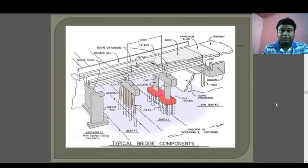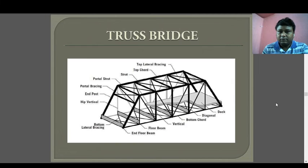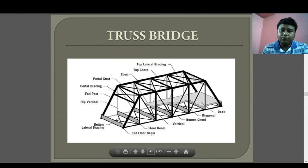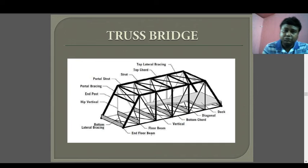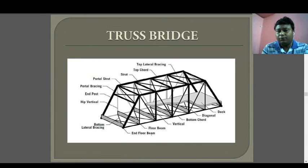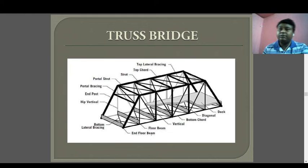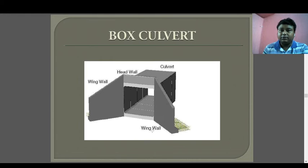These are typical bridge components. For truss bridges, the various components include: end floor beam, floor beam, strut, portal strut, and portal bracing. If you have studied steel structures, you can find these types of components in bridges.